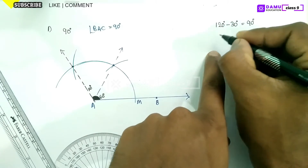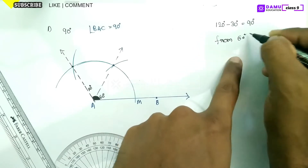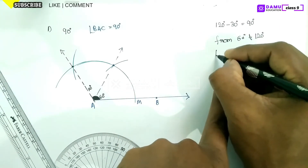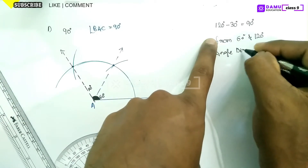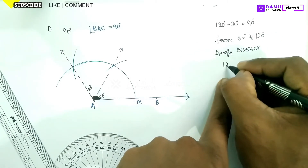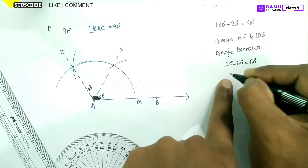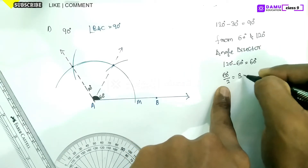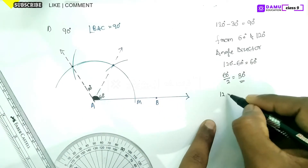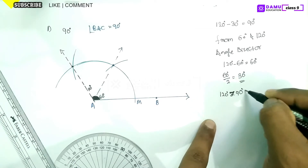Now we are going to do angle bisector between 60 degrees and 120 degrees. The angle between them is 120 minus 60 equals 60 degrees. The angle bisector gives 60 divided by 2 equals 30 degrees. Adding 30 to 60 gives 90 degrees, so 90 degrees will lie between 60 and 120.